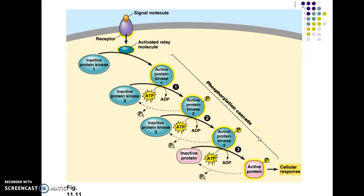That's pretty much the gist of a phosphorylation cascade. Like I said, it's like setting up a bunch of dominoes next to each other, flicking one of them, and then watching the whole thing roll down.